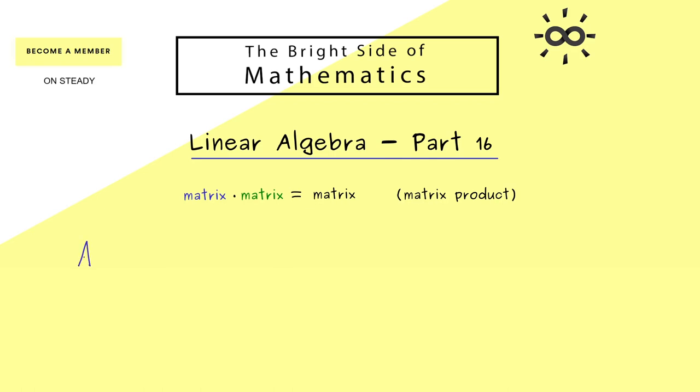However, here please recall, we already know the matrix-vector product. It tells us that we can multiply a matrix with a vector and we get a vector out again. Moreover, please also recall that this was a meaningful definition because we used it for systems of linear equations.